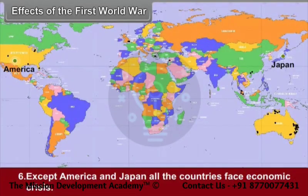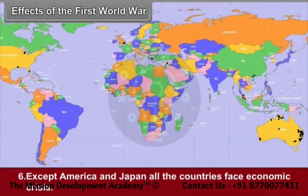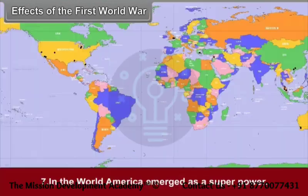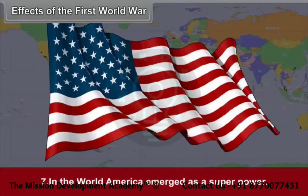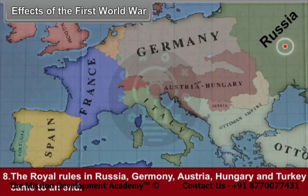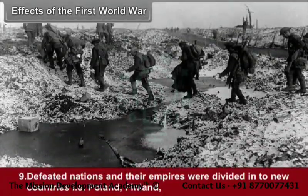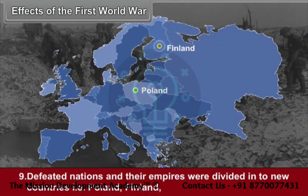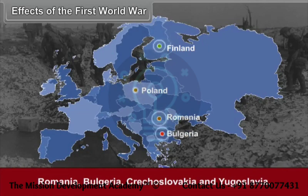Sixth, except America and Japan, all countries faced economic crisis. Seventh, in the world war, America emerged as a superpower. Eighth, the royal rules in Russia, Germany, Austria, Hungary, and Turkey came to an end. Ninth, defeated nations and their empires were divided into new countries, namely Poland, Finland, Romania, Bulgaria, Czechoslovakia, and Yugoslavia.